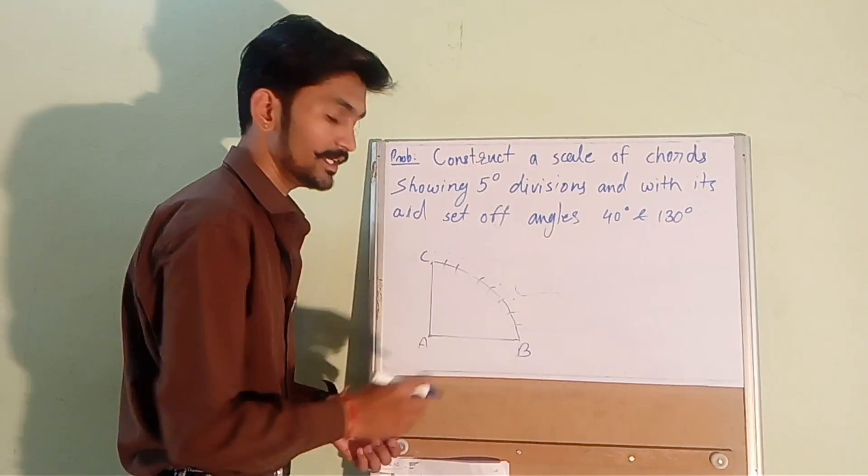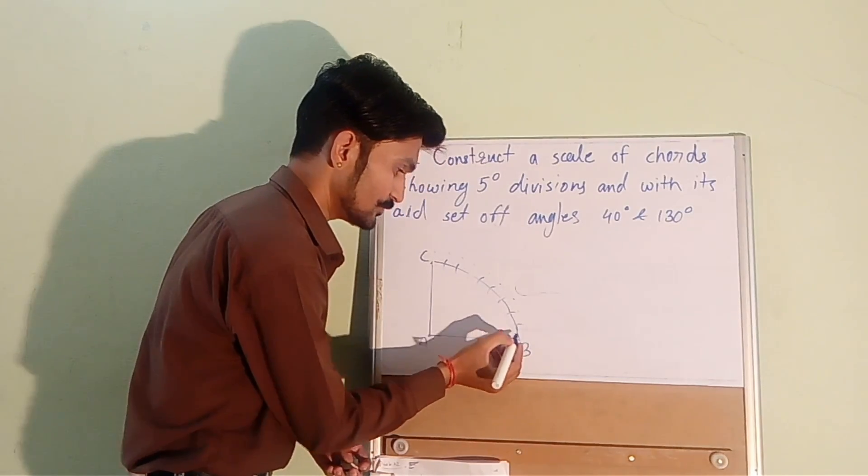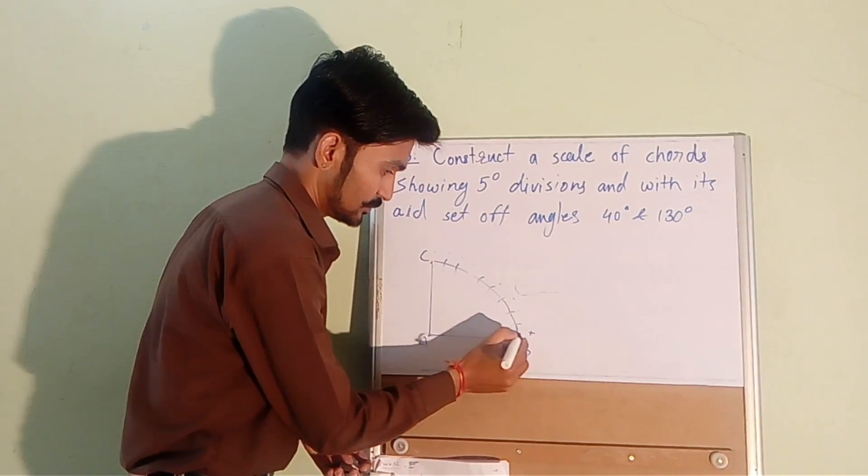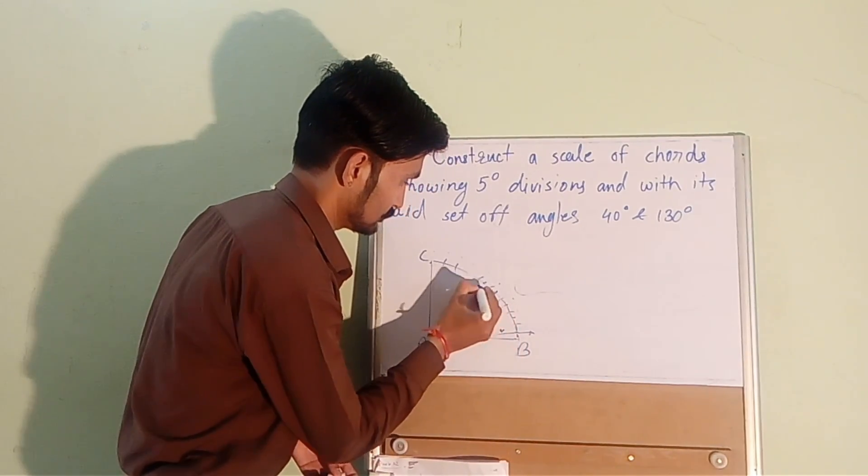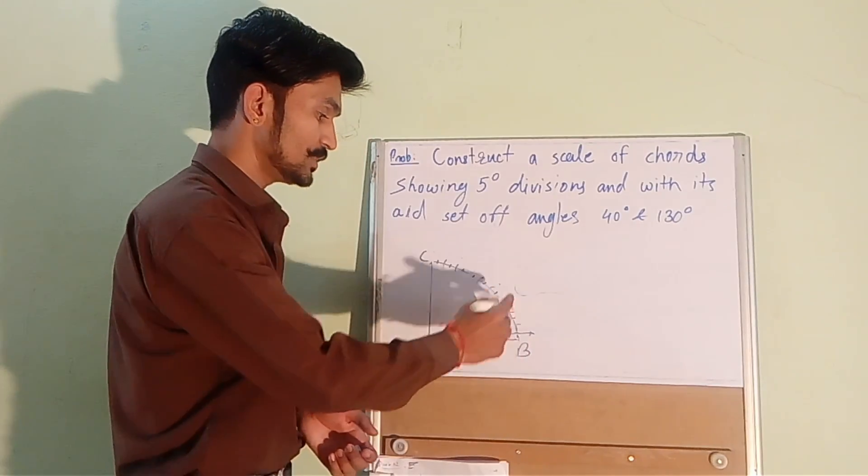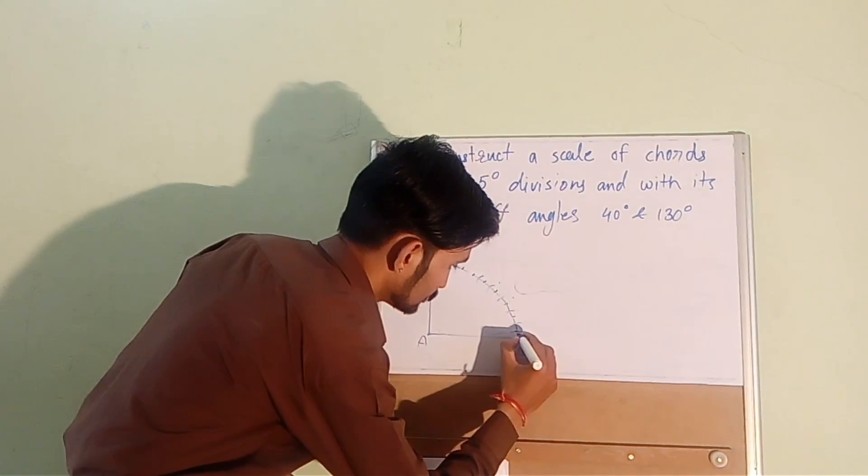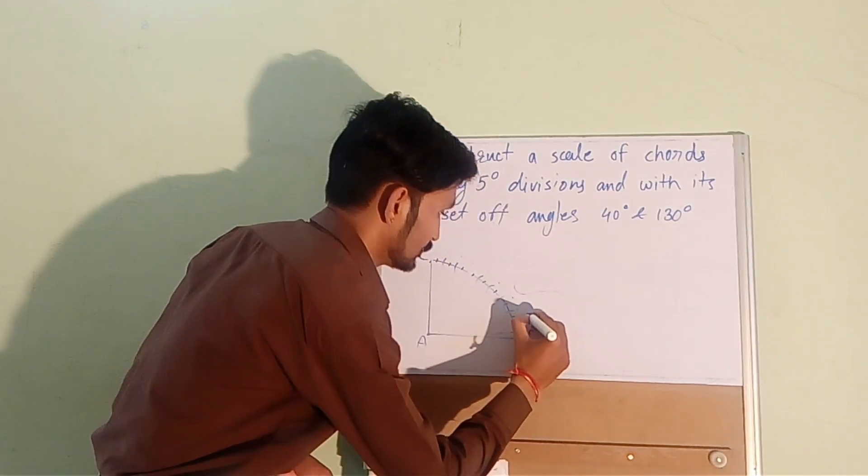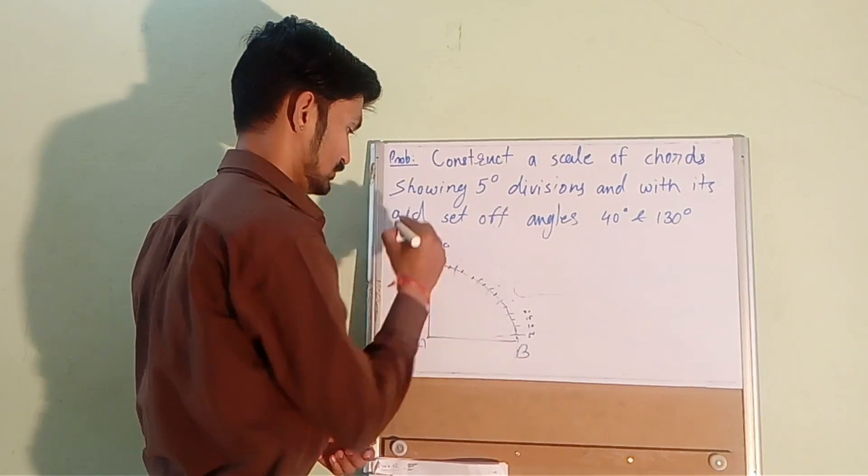Now subdivide each segment into two equal parts and this is very easy. We can draw a bisector. Each of these division is showing 5 degree this is 5, 10, 15, 20 and up to 90 degree.